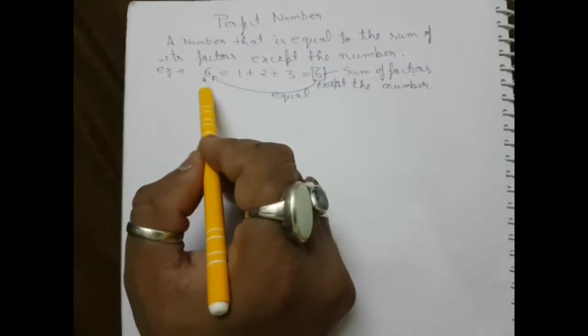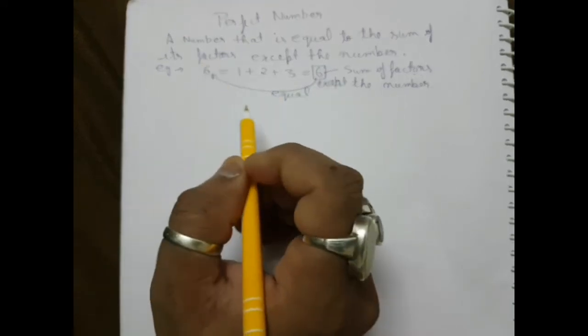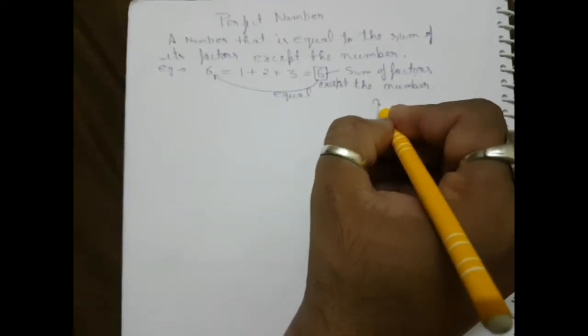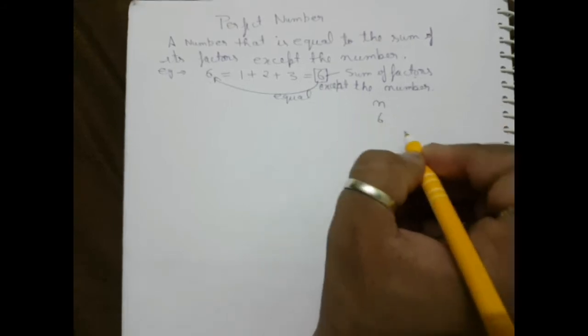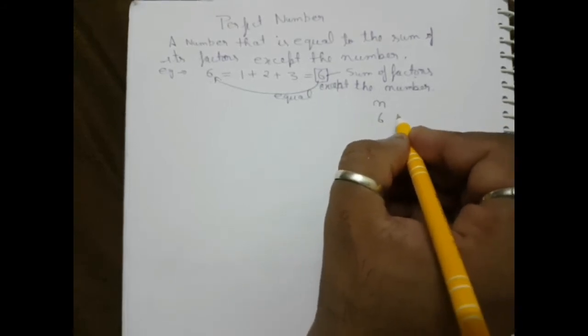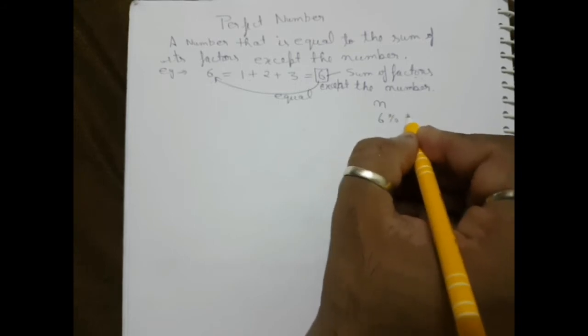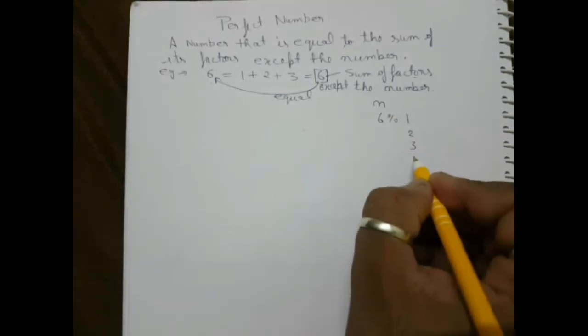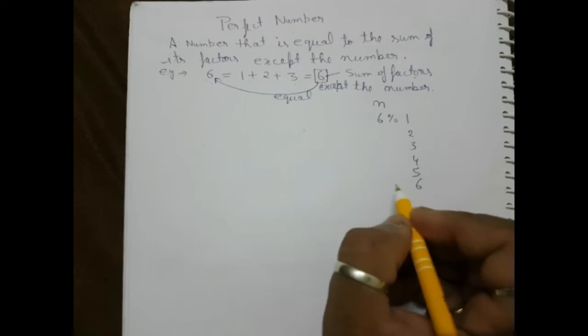The basic idea of this program is that when we take a number n, suppose the value is six, we need to check its divisibility with one, then two, then three, then four, then five, then six. We check if the remainder is zero.